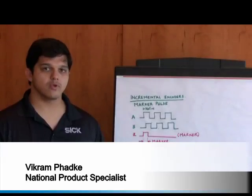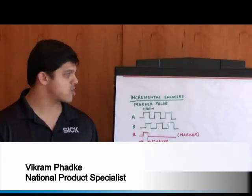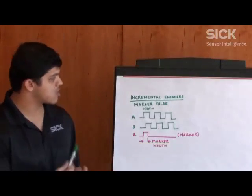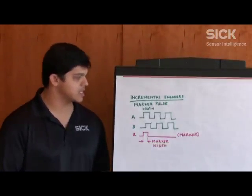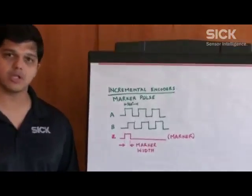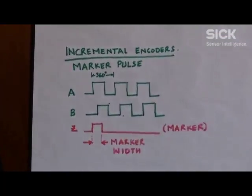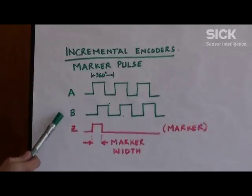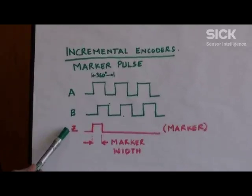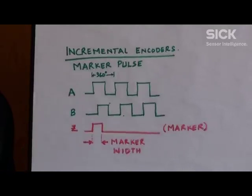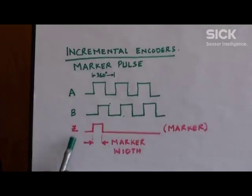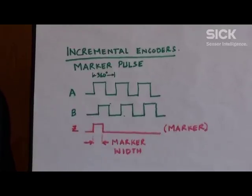We are going to do a quick overview of the marker pulse. The marker pulse is a single pulse per rotation, which you get for incremental encoders. As you can see here, you have the A and B channel and the Z channel, which is typically called the marker channel — you will get one pulse per turn.